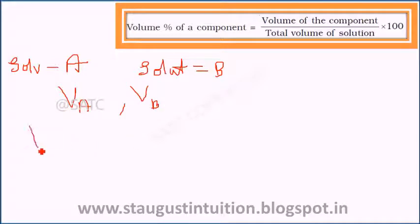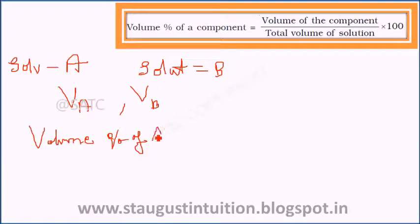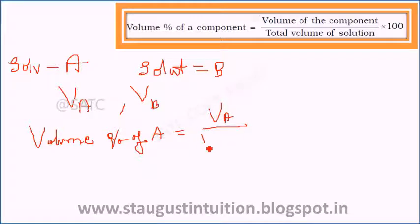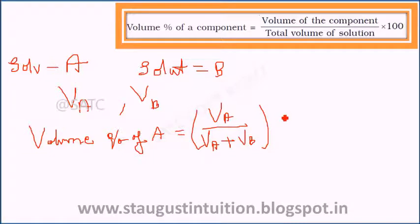Volume percentage of A is very simple: it is the volume of A divided by the total volume — that is, volume of A plus volume of B — multiplied by 100.